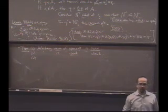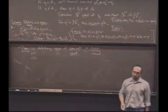How many people say yes? How many people say no? Can you give me an example? Arbitrary intersection of open sets that's not open?